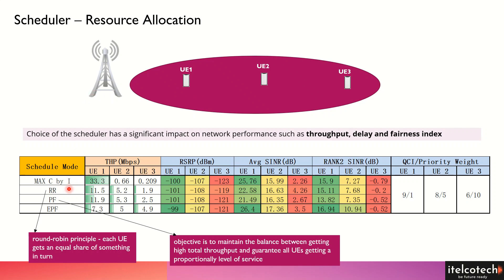There are different scheduler modes used in the base station. One of them is Max C/I. As the name signifies, wherever the signal-to-interference ratio is very high, that user will get more resources. You can see the throughput for user 1 is quite high — its signal strength is good, its SINR is good, and its rank indicator 2 is good.